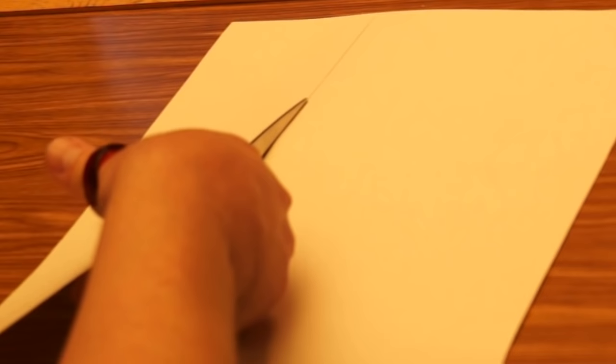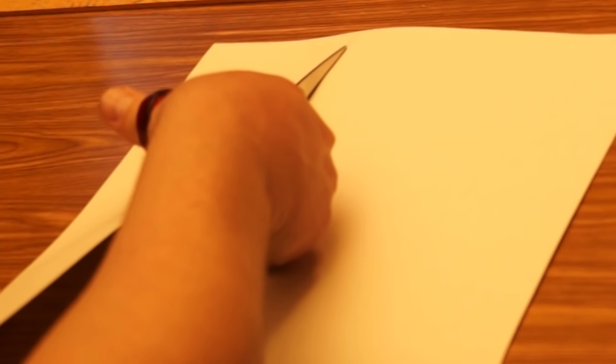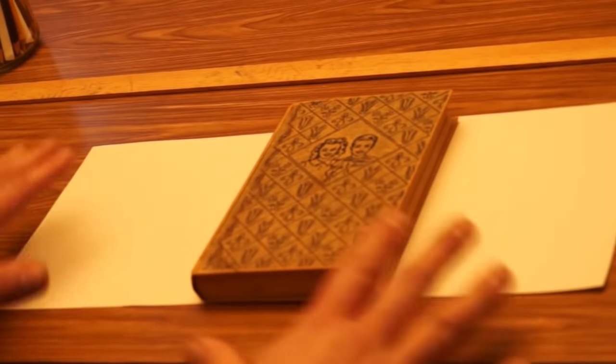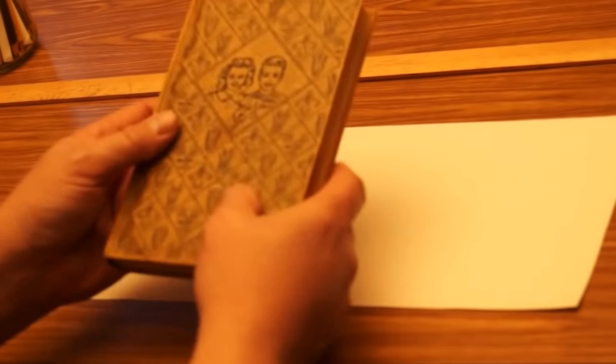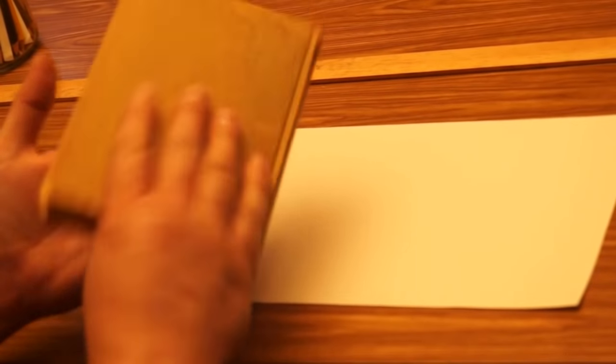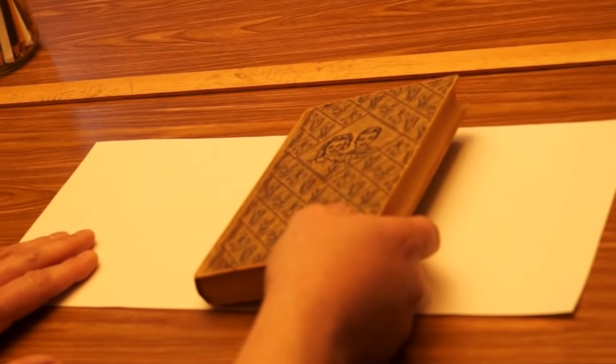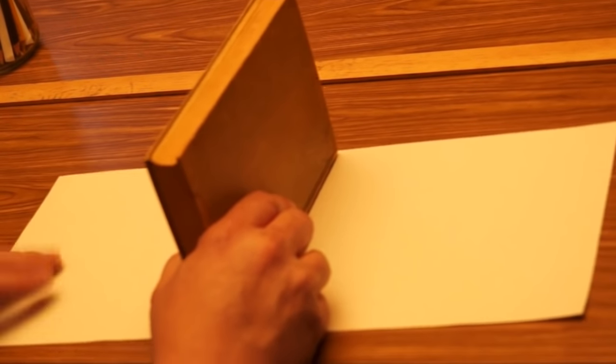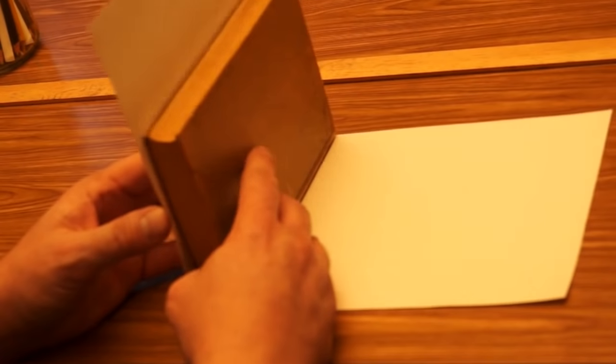Now of course the purpose of the book cover or book jacket is number one to protect the book from being damaged, the original cover from being damaged. And it's also, the second purpose is usually to make the book more interesting to look at so that it might attract people to buy it. A lot of times they'll have more information on the cover than what you have on a normal cover. And so that's part of what we're doing today is we're designing that book jacket or book cover to attract people's attention to what's in the book.